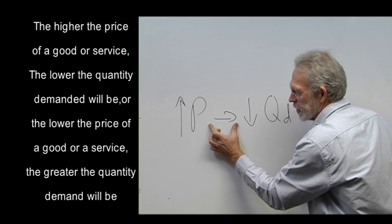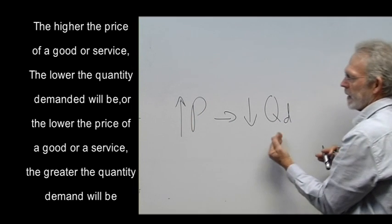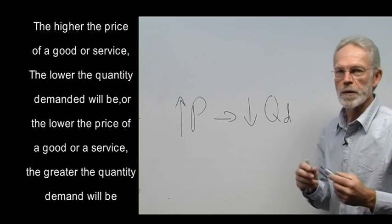Causality is shown by this arrow. In other words, it's the change in price that causes the change in quantity demanded.